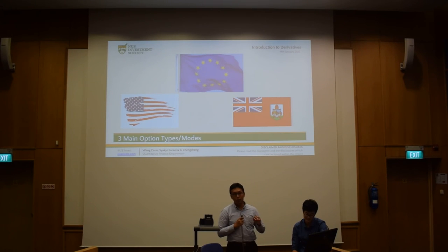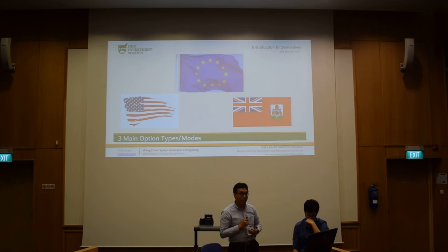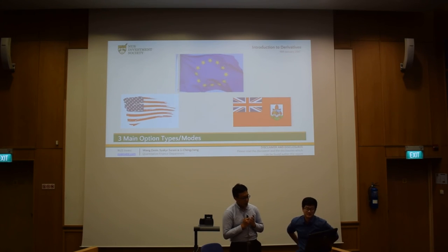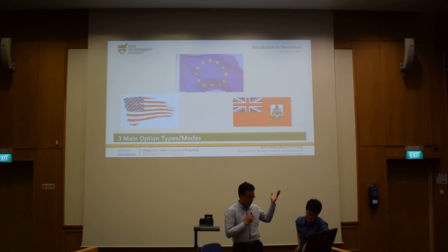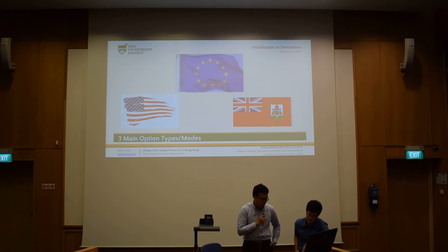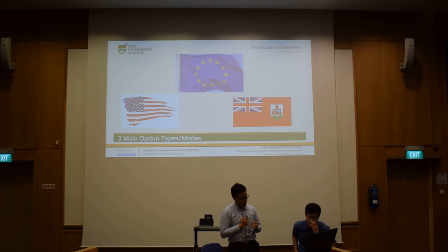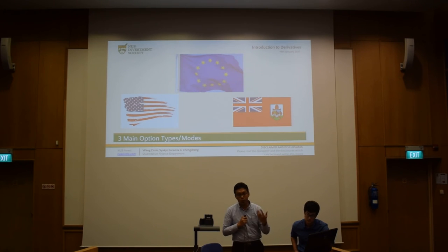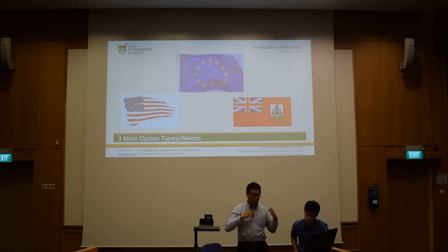There are three main option modes. American options are the most flexible — you can exercise the option at any point in time up to the expiration date. European options are more traditional, allowing you to exercise only on the expiration date itself. Bermuda options are a hybrid: you can only exercise at specified times leading up to the expiration date. In this workshop, I will refer mainly to American options, simply because they are more prevalent due to the size of the US markets.